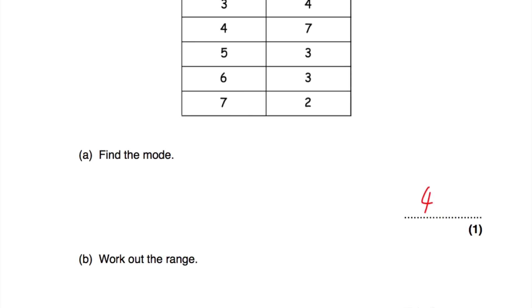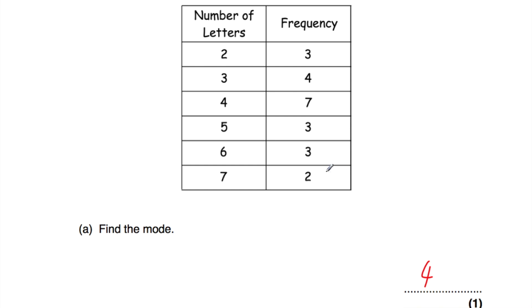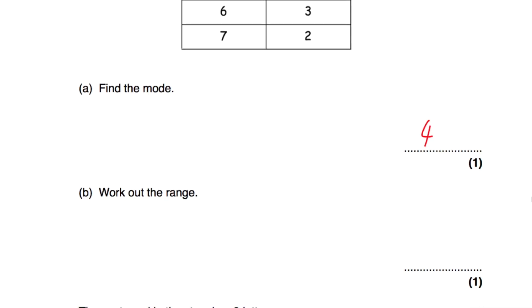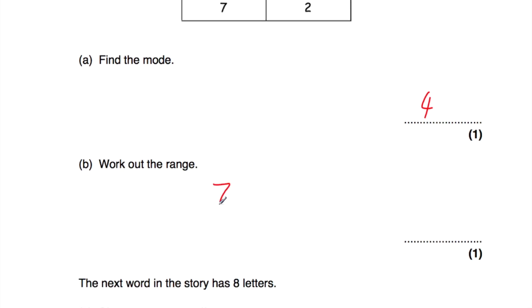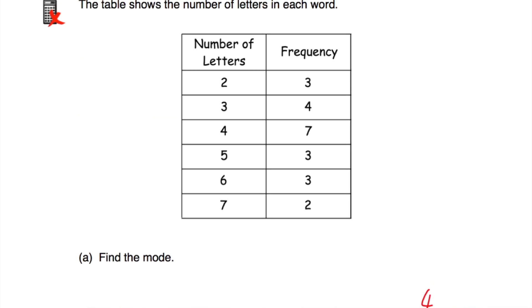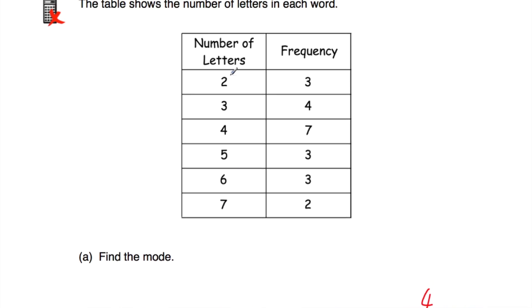Part B: find the range. The biggest takeaway the smallest — there are 7 letters in the longest words and 2 letters in the shortest. Seven subtract two equals five, so the range is 5.